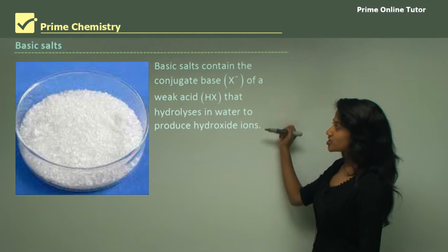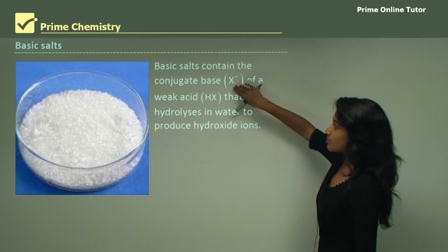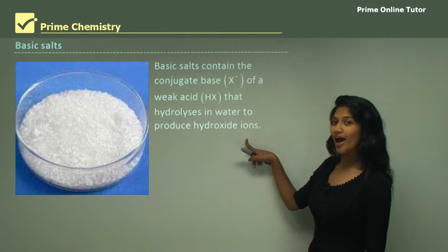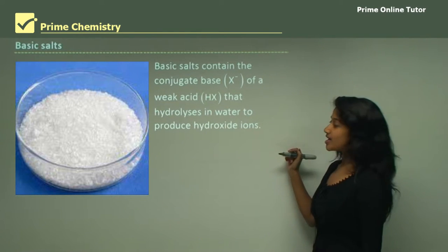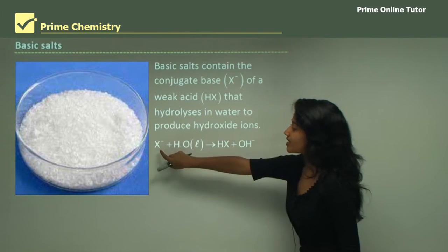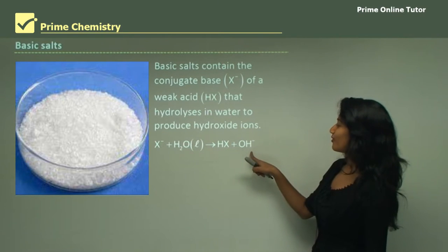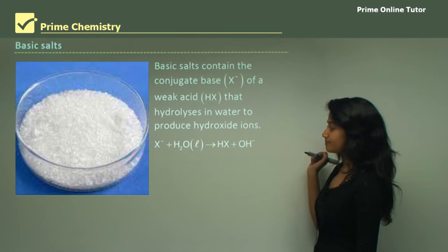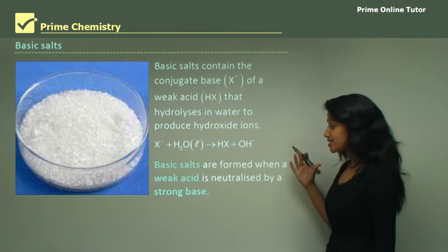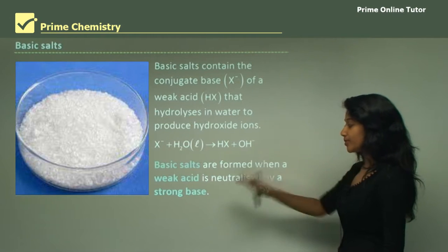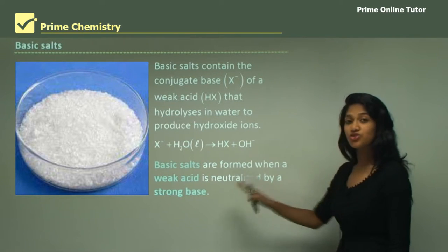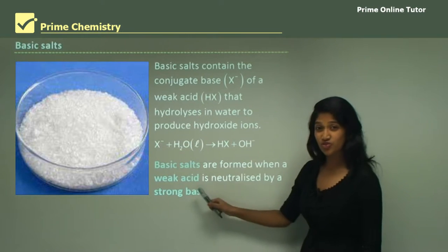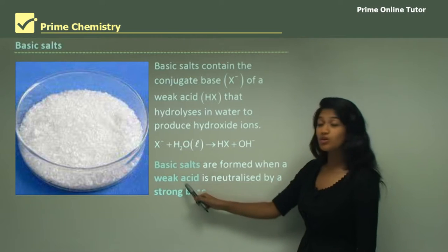The conjugate base x⁻ hydrolyzes in water to form hydroxide ions. We have x⁻ reacting with water to form our hydroxide ion along with the weak acid. Basic salts are formed when a weak acid is neutralized by a strong base — so basic salts must have a strong base and a weak acid.